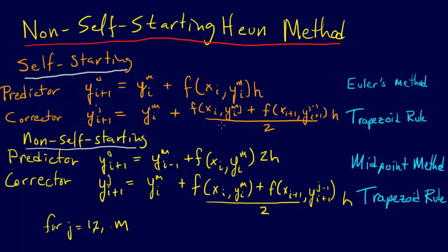And so let's start examining the differences here. So first, the predictor for the self-starting Heun, for the regular Heun method, the self-starting one, it uses Euler's method as the predictor. We just say y_i+1 is equal to y_i plus f of x_i, y_i times h.